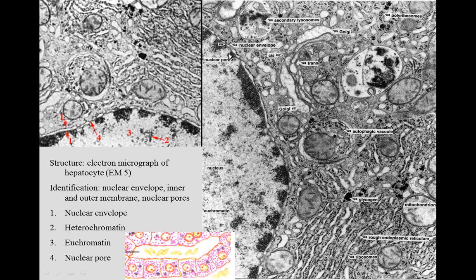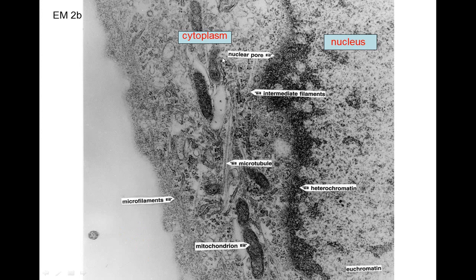We can also see nuclear pores. We can see the nuclear envelope on the outer leaflet of the nuclear envelope. We can see ribosomes - there's rough ER with ribosomes as well. We're supposed to see the nuclear pores where you have heterochromatin come up to the edge of the pore and where the messenger RNA can escape from the pore.